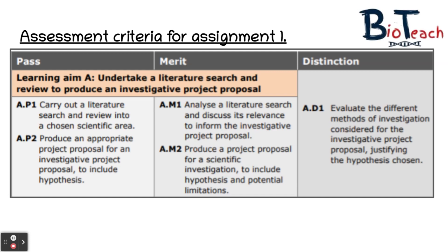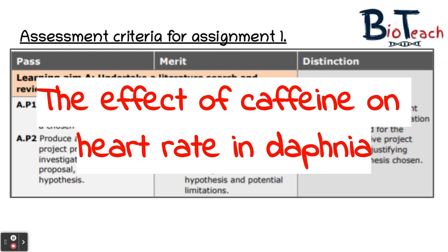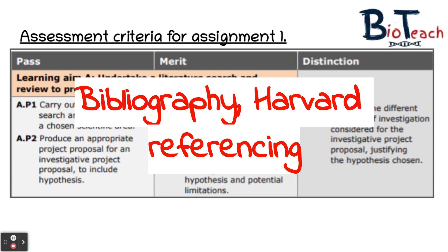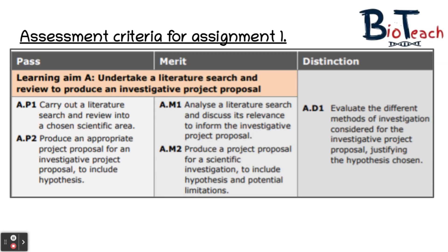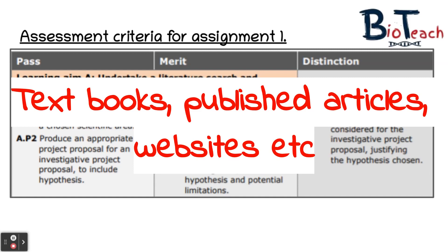For example, if your experiment proposal is to look at the effect of caffeine on heart rate in Daphnia or water fleas, your literature review will look at other scientific research carried out on this topic and discuss what the findings were. You'll be expected to provide a comprehensive bibliography and list of references using the Harvard referencing system, including sources from textbooks, scientific papers and online sources — you need a range of sources, otherwise you might limit yourself grade-wise.